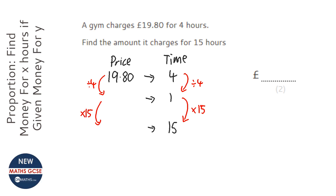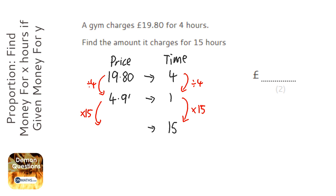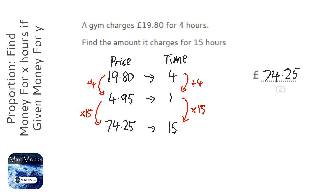I'm going to get my calculator and do 19.8 divided by 4. I get £4.95, and I'm going to times that by 15. That gives £74.25, so my answer is £74.25.